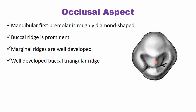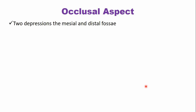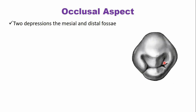Opposite the buccal triangular ridge is the lingual triangular ridge, which is very small and less developed, corresponding to the smaller lingual cusp. From the occlusal aspect there are two depressions adjacent to these ridges: the distal fossa and the mesial fossa. The mesial fossa is associated with the mesiolingual developmental groove depression, and the distal fossa is an irregular depression. These fossae are not exactly triangular in shape.